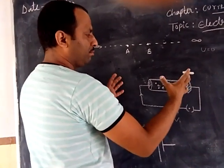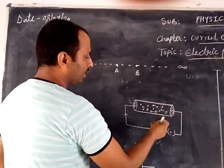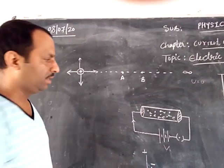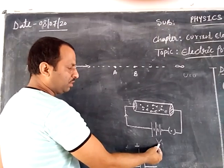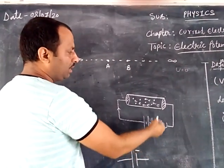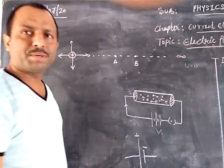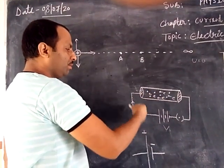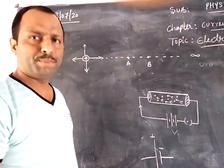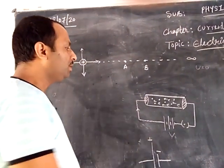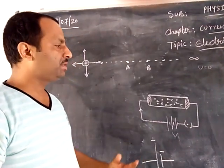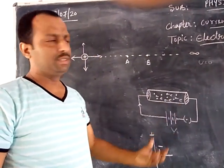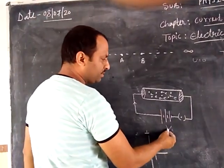When a potential difference is applied, current can flow. Due to the application of potential difference, the free electrons present in the conductor will start drifting towards the positive end of the battery. This term — drift — is most frequently used under the effect of the electric field.